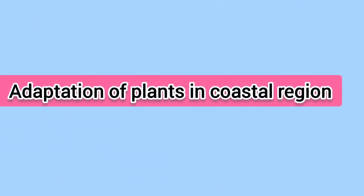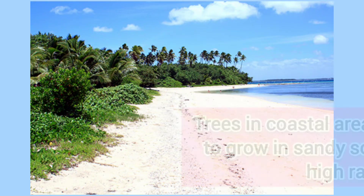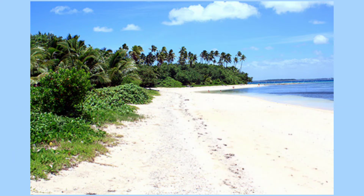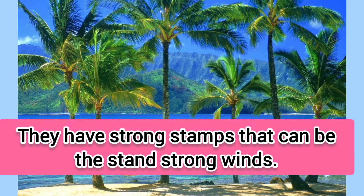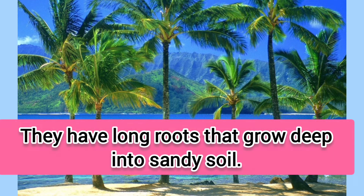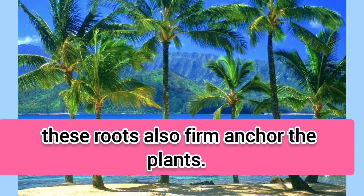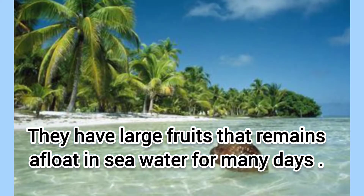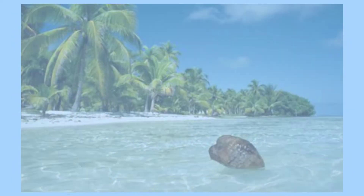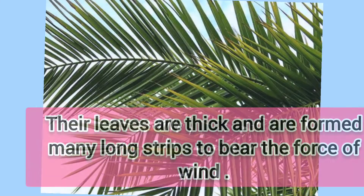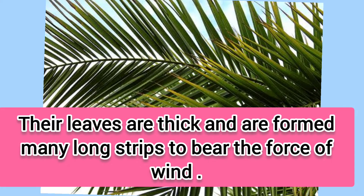Adaptation of plants of coastal region: Trees in coastal areas are well adapted to grow in sandy soil, salty water, and high rainfall. They have strong stems that can withstand strong winds and long roots that grow deep into sandy soil, anchoring the plants. Coconut and palm trees grow well in these areas. They have large fruits that remain afloat in sea water for many days and can give rise to new plants on reaching the shore.